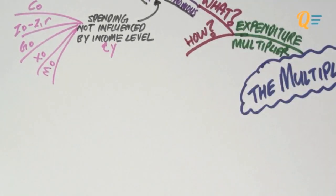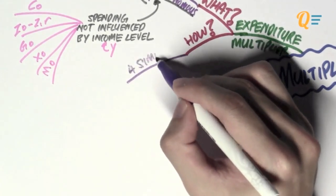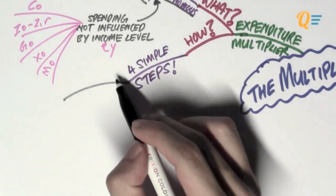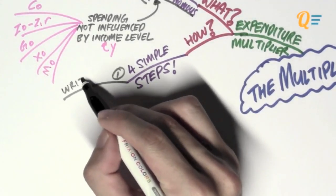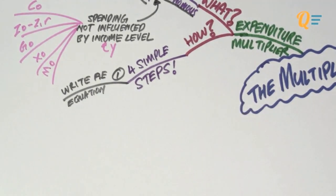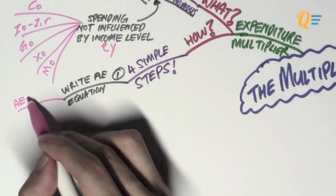So, let's go into detail, and I'm talking about the mathematics part, on how we're going to calculate the multiplier. So, we're going to apply four very simple steps to this. The first step, which I hope you should be really good at, is to write down the AE equation. Write down the aggregate expenditure equation.